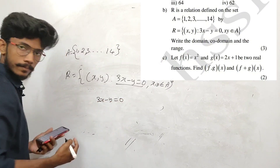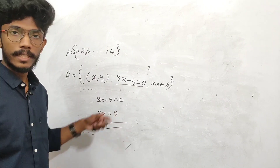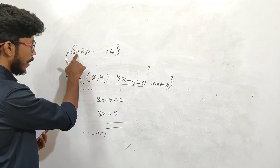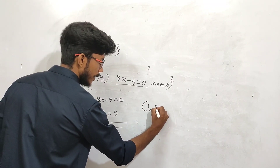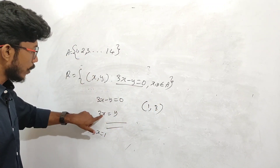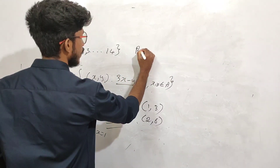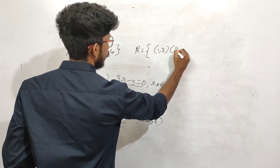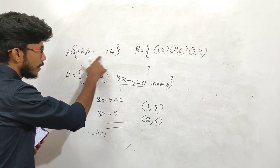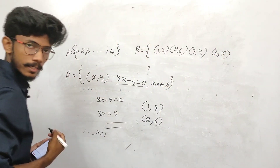R is defined by 3x minus y equals 0, which means 3x equals y. Taking x equals 1, y equals 3. x equals 2, y equals 6. x equals 3, y equals 9. x equals 4, y equals 12.